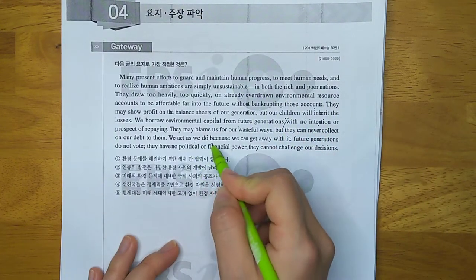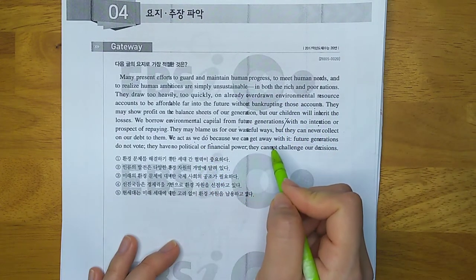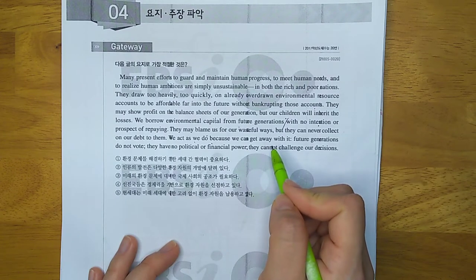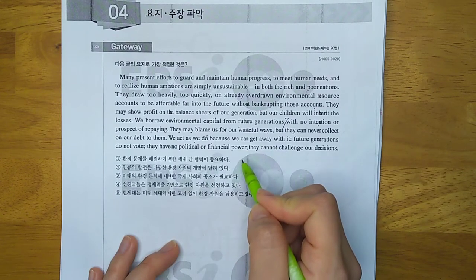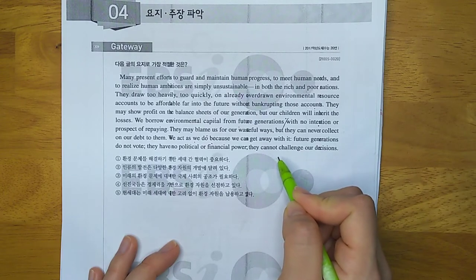We act as we do because we can get away with it. Future generations do not vote. They have no political or financial power. They cannot challenge our decisions.